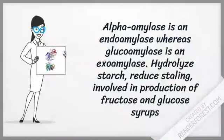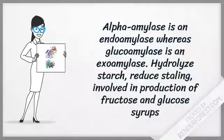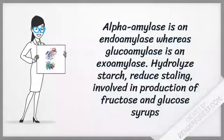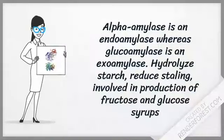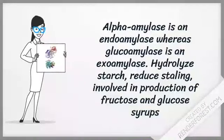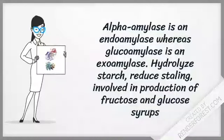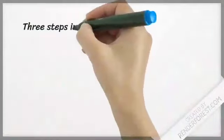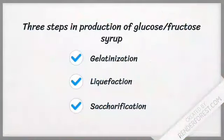Both enzymes also improve the quality of bread and are involved in the production of fructose and glucose syrups. Alpha-amylase is responsible for hydrolyzing starches, working from anywhere within the starch to reduce it to glucose and maltose. It has extensive application within the food industry. As starch is used in the production of fructose and glucose syrups, there are three steps involved: gelatinization, liquefaction, and saccharification.